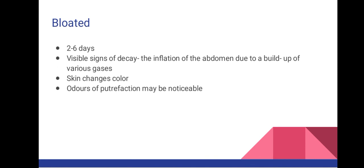This is visible around the tongue and eyes as the buildup of gases causes them to protrude. Skin changes color, taking on a marble appearance, due to the transformation of hemoglobin in the blood into other pigments. Blood bubbles may form at the nostrils as well as other orifices, and the odor of putrefaction may be noticeable.